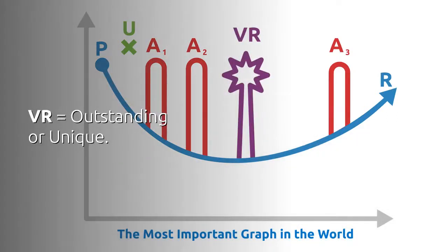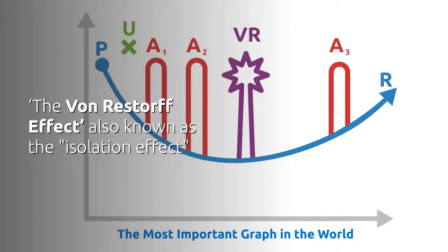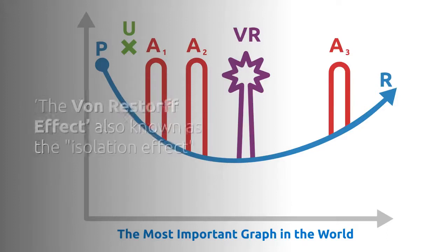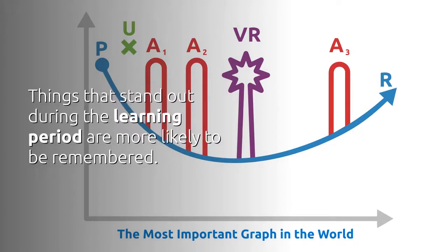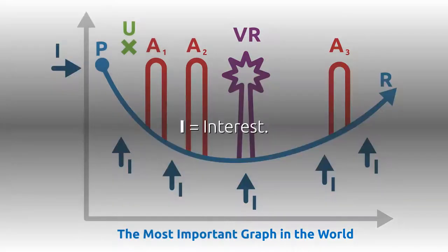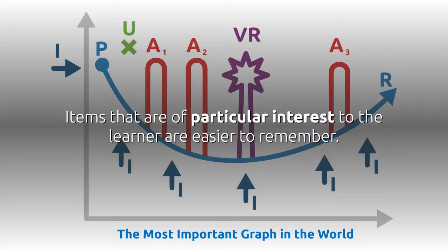VR equals outstanding or unique. The von Restorff effect, also known as the isolation effect. Things that stand out during the learning period are more likely to be remembered. I equals interest. Items that are of particular interest to the learner are easier to remember.